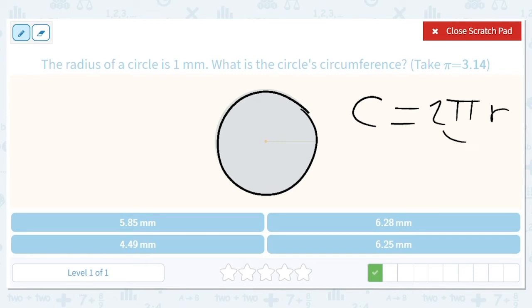But 2 times r is d, so you could write C equals πd. And the diameter here, where the radius is 1, it's just going to be 2 times pi. So C equals 2 times pi, and pi is 3.14, so it'll be 6.28.